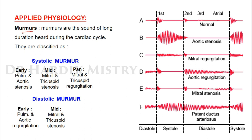Applied physiology — murmurs: murmurs are sounds of long duration which are heard during the cardiac cycle. They are classified as systolic murmur and diastolic murmur. Systolic types include: early systolic murmur in pulmonary and aortic stenosis; mid-systolic murmur in mitral and tricuspid stenosis; and pan-systolic murmur in mitral and tricuspid regurgitation.